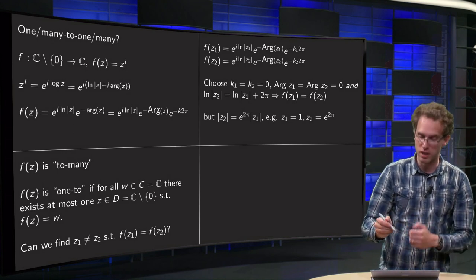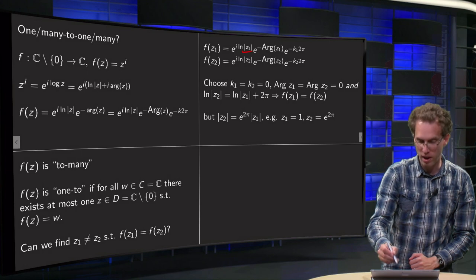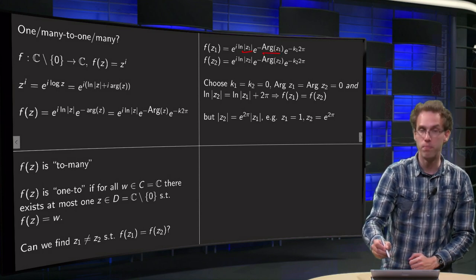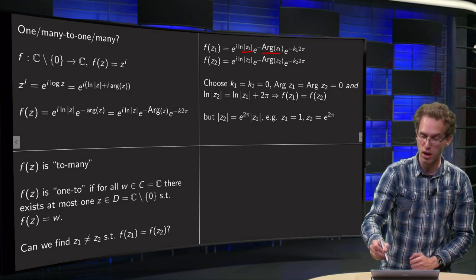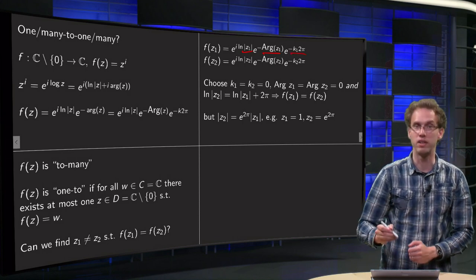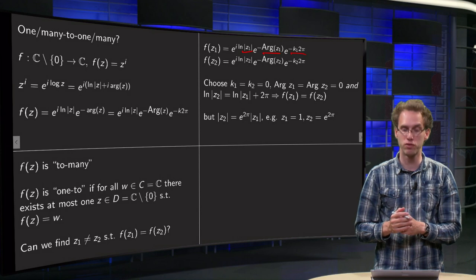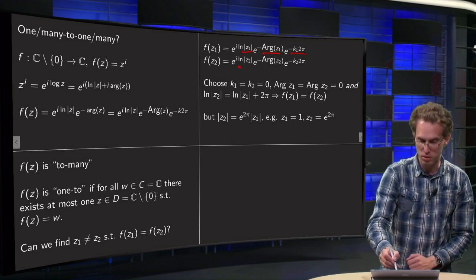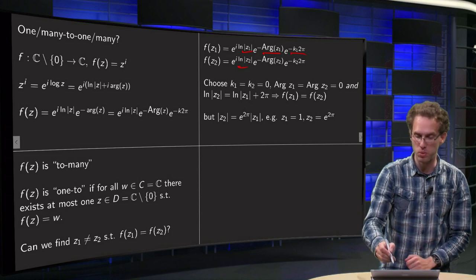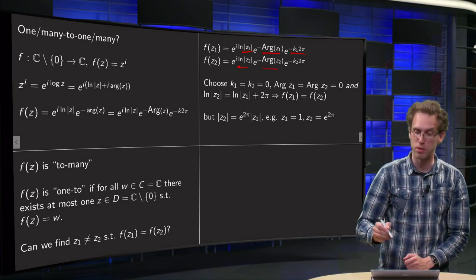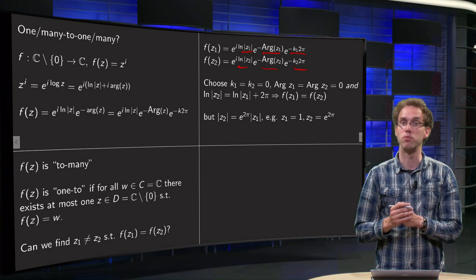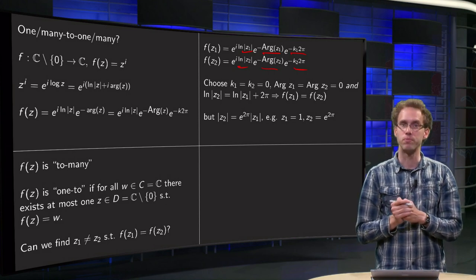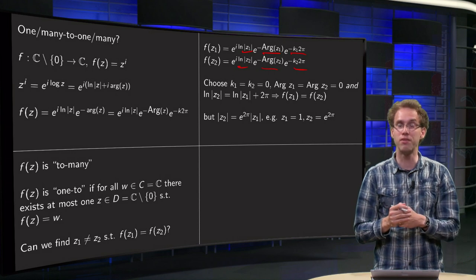So f(z1), just write down the definition: e^(i ln|z1|) · e^(-Arg(z1) - 2πk1) equals f(z2) = e^(i ln|z2|) · e^(-Arg(z2) - 2πk2). Now we want to get them equal.